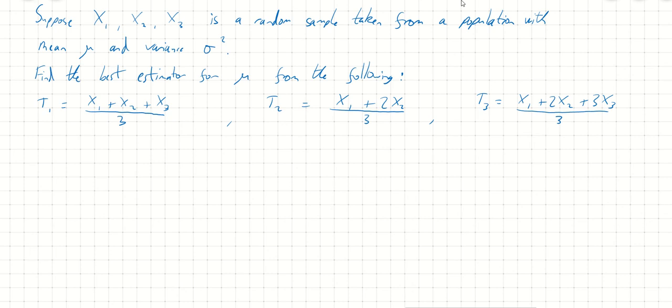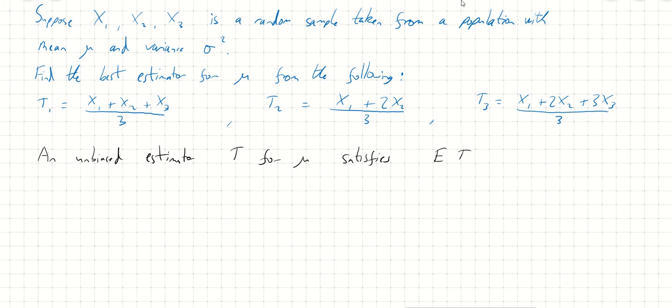Whenever we're comparing estimators, we have to see whether they're unbiased. An estimator is not usually particularly great unless it's unbiased. An unbiased estimator t for mu satisfies E[t] equals mu. If we're trying to use our estimator t to estimate mu, we want the expected value of t to be equal to mu.